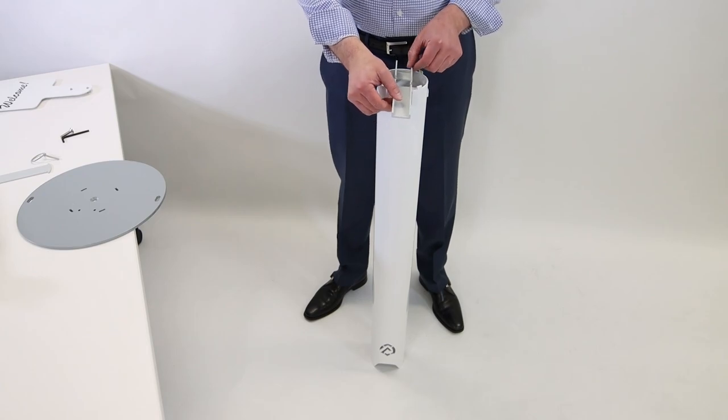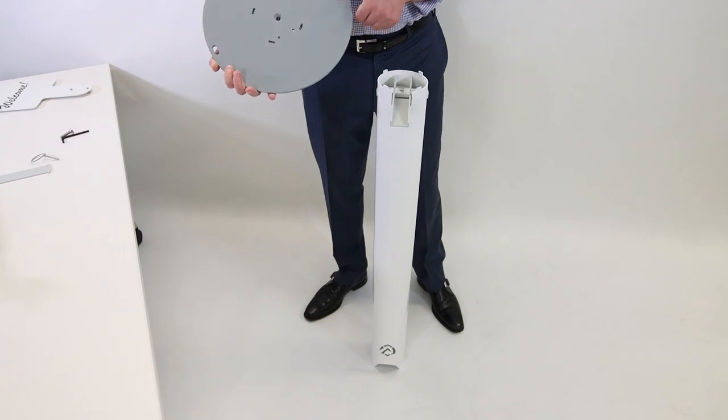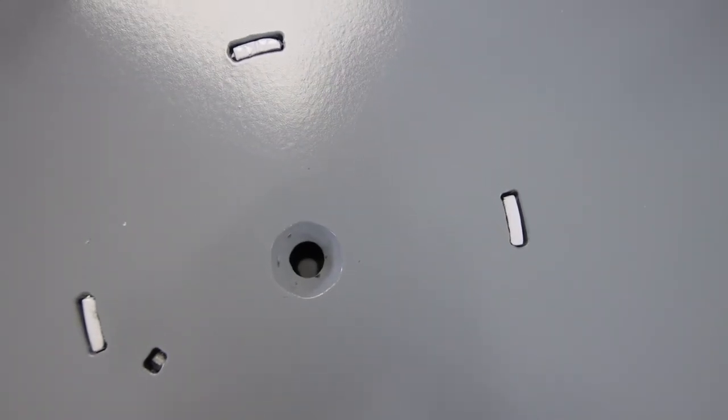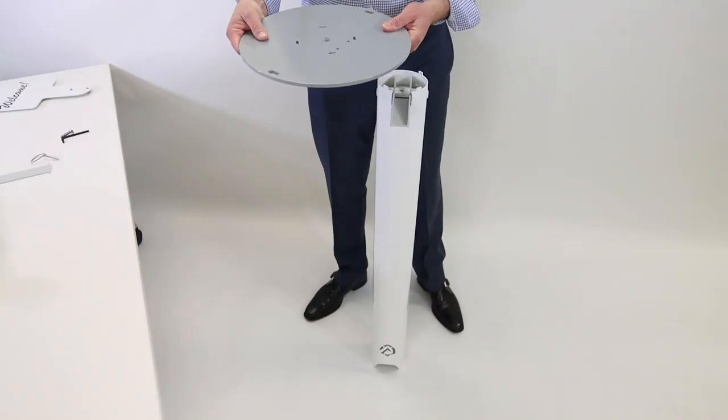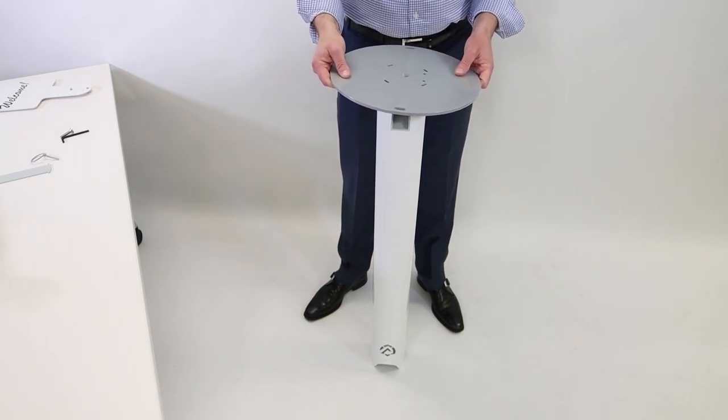Now we take our foot pedal and we drop it on top of our cross beam. Now we take our base plate and we take the side with a countersunk hole and that goes upwards. Next we position it over the top of the main tube.